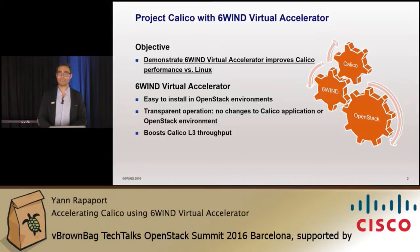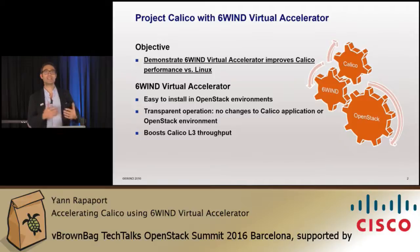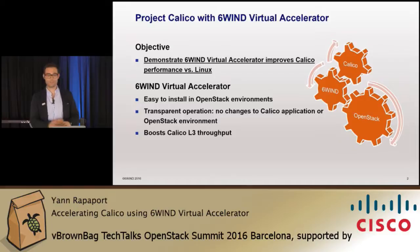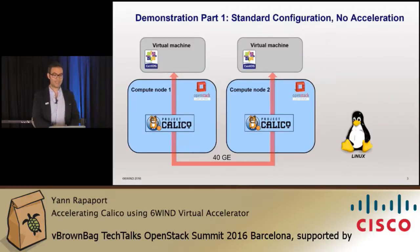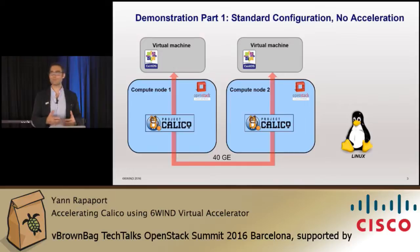In the demo we will show how Sixwind Virtual Accelerator accelerates the hypervisor performance. It's easy to install in an OpenStack environment and transparent to the environment — there is no change required to the OpenStack environment or to the Calico configuration. And we will see the performance boost brought by Virtual Accelerator.